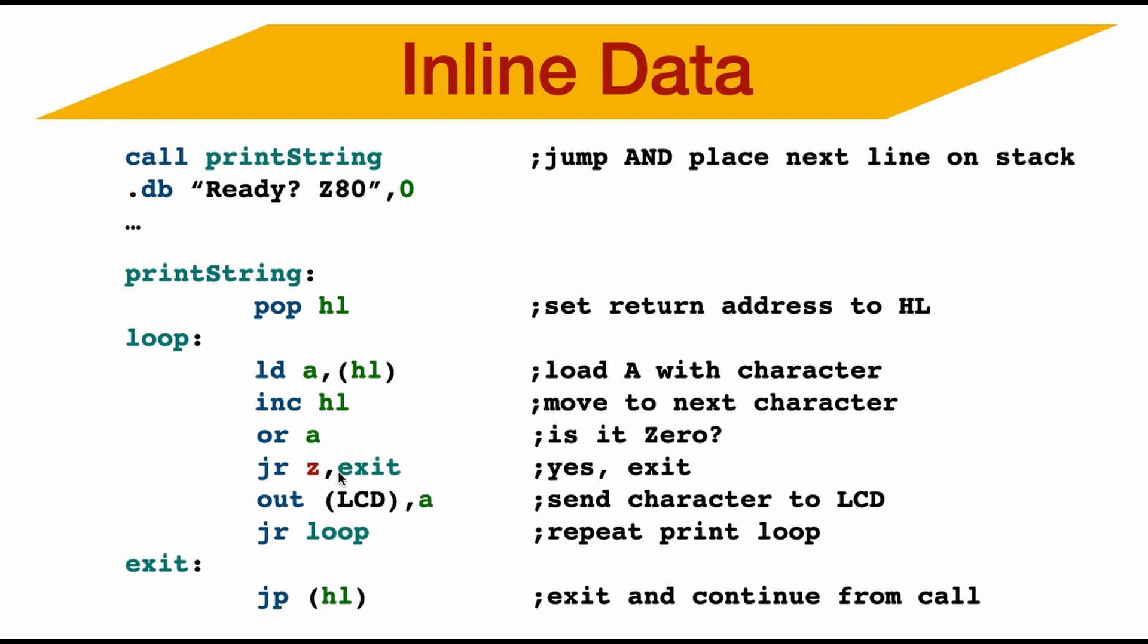Comparing if it's zero. And if it is zero, exit. Otherwise we do something with the character, like output it to an LCD screen. And we just loop again until we come down to the exit routine. And then simply because we've already incremented HL half to zero, HL is now the next line. So we just jump back to the address of HL, which is the next line.